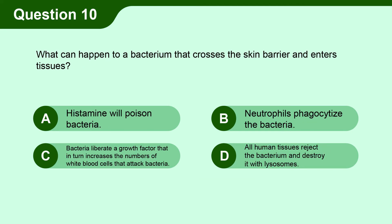Question 10. What can happen to a bacterium that crosses the skin barrier and enters tissues? A. Histamine will poison bacteria. B. Neutrophils will phagocytize the bacteria. C. Bacteria liberate a growth factor that in turn increases the numbers of white blood cells that attack bacteria. D. All human tissues reject the bacterium and destroy it with lysosomes.